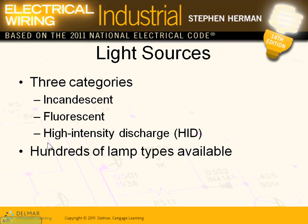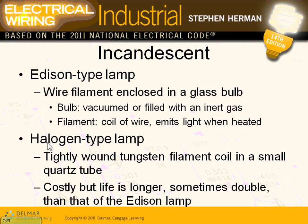Type of lighting source — God forbid using an incandescent light. We studied these in detail. Fluorescent light, especially in Minnesota, might not be an option for outdoor because of very cold temperatures. High intensity discharge is the option right now, with LEDs taking care of the rest. These are the three options that you have.